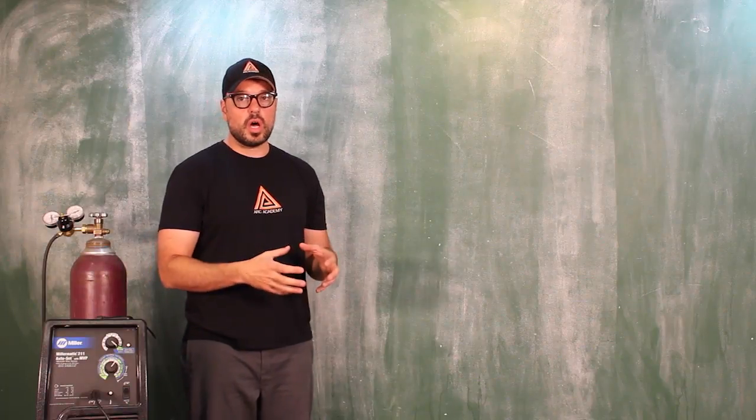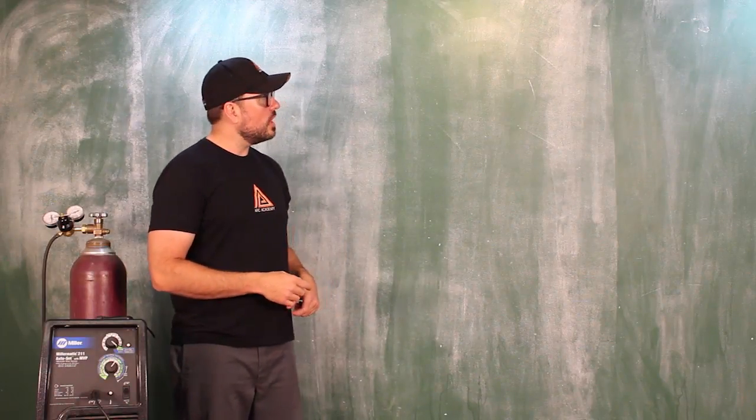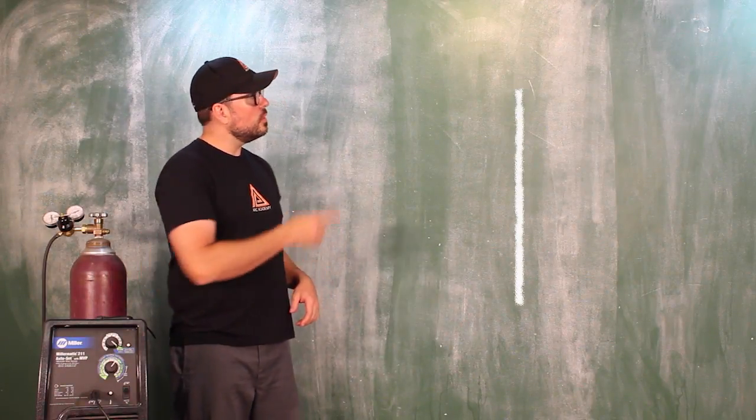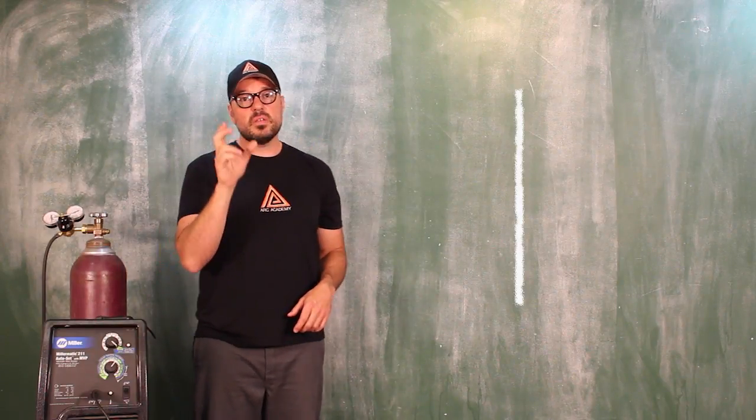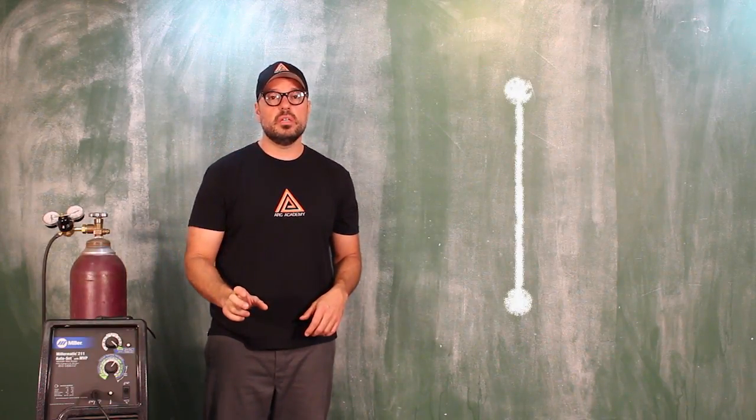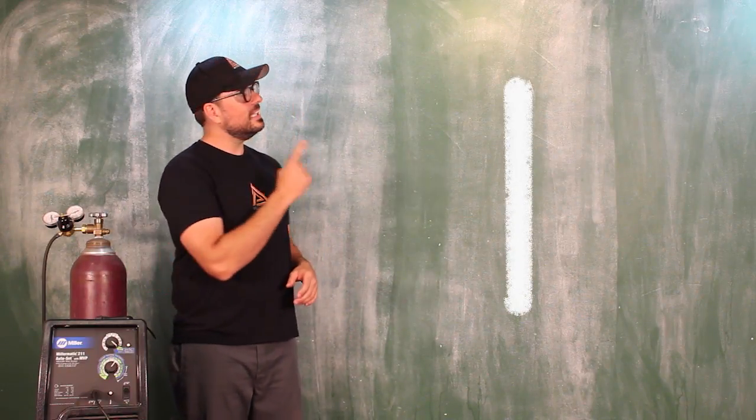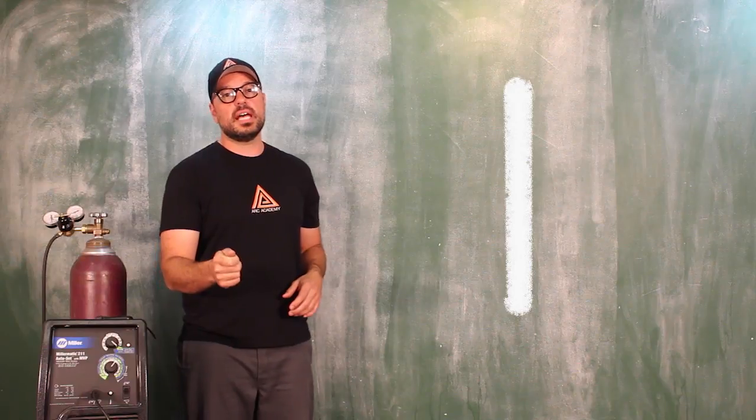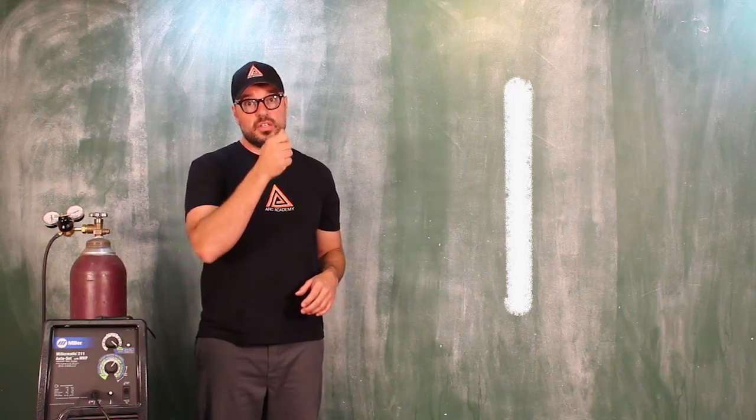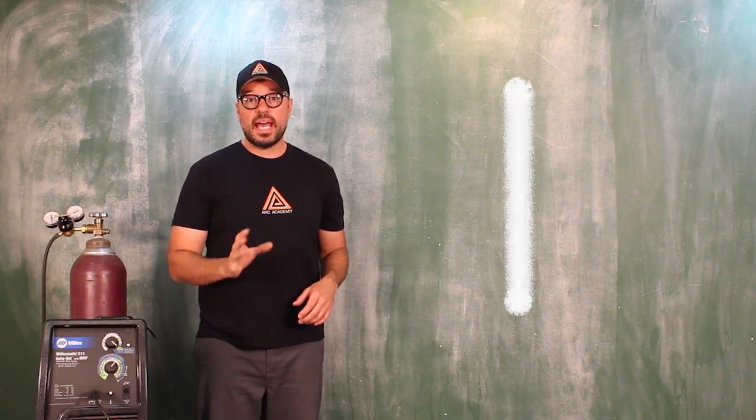Because what we want to do when we're done, we want to see two nice, even, parallel edges to our bead. The only way to get these two even parallel edges is to keep that puddle the exact same size the entire time as you are moving through your weld zone.